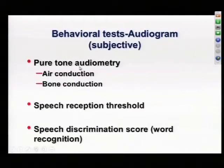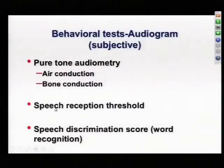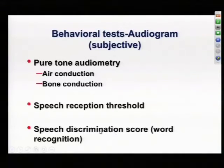We do pure tone audiometry — specific tones like 250 Hz, 500 Hz, 1000 Hz, 3000 Hz, and so on. They test it two ways: by putting an insert or headphone over the ear, going through the ear canal and eardrum — that's air conduction — and also by putting an oscillator on the bone, sending sound through the bone and bypassing the middle ear, testing bone conduction. It's also important to look at speech performance, which includes a speech reception threshold and a speech discrimination score.